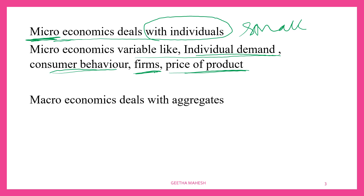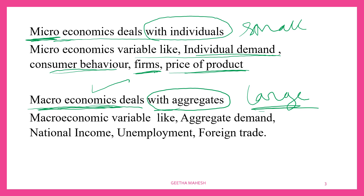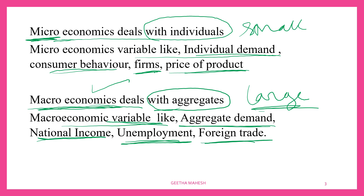What do you mean by macro? Macro means large, so macroeconomics deals with a large part of the economy. Macroeconomics deals with the aggregates. Macroeconomic variables are aggregate demand, national income, unemployment, foreign trade, and government budget — which we will discuss as the economy as a whole. Because of that reason, we say macroeconomics deals with the aggregates.